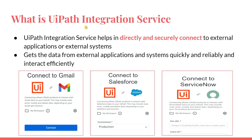So what is UiPath Integration Service? UiPath Integration Service helps to directly and securely connect to external applications or external systems. You can connect to Gmail, Salesforce, ServiceNow, and many other applications. The purpose of connecting could be sending automated emails, reading incoming emails with certain subject lines or content, managing your Gmail entirely, or deleting certain things — any purpose for which you would like to directly and securely connect to an external application.